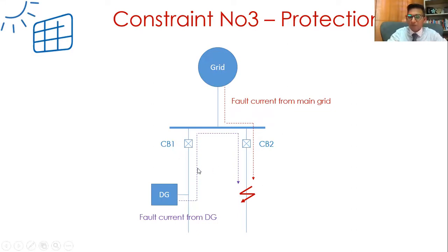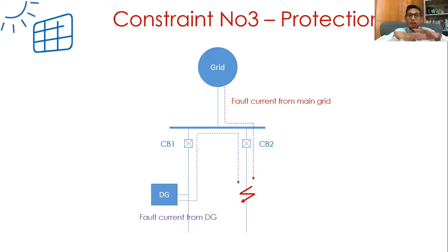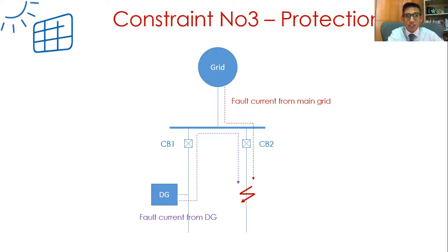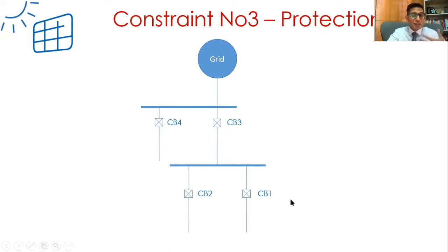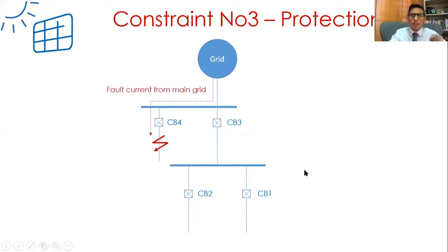What will happen to CB1? It's going to trip as well because it is sensing an overcurrent. So now with a fault downstream of CB2, both CB1 and CB2 trip - a complete blackout of the system, only because of the addition of distributed generation. We can fine-tune the protection system, but it's not easy. If you have intelligent relays, this can be done. But when you have static switch-fuse devices that can't be reprogrammed, things become difficult.